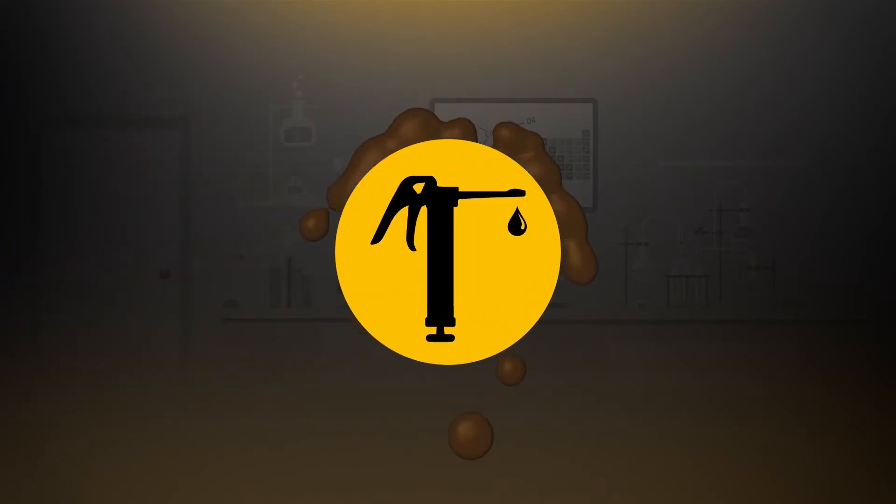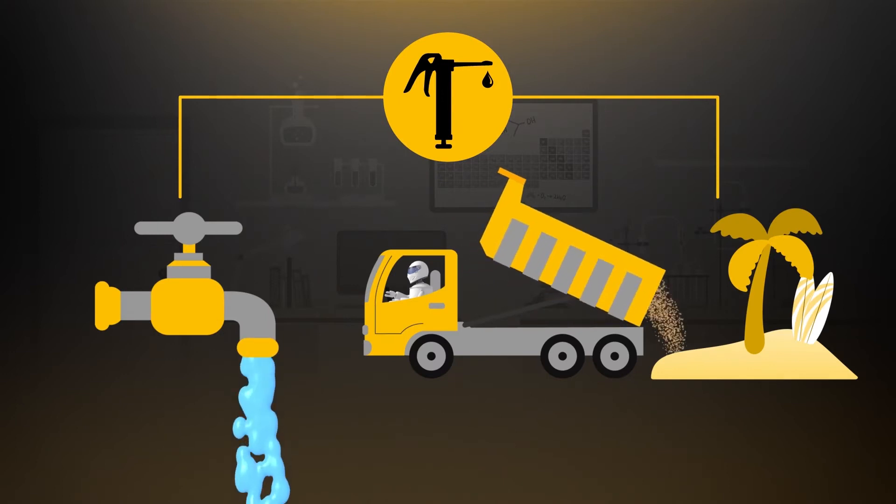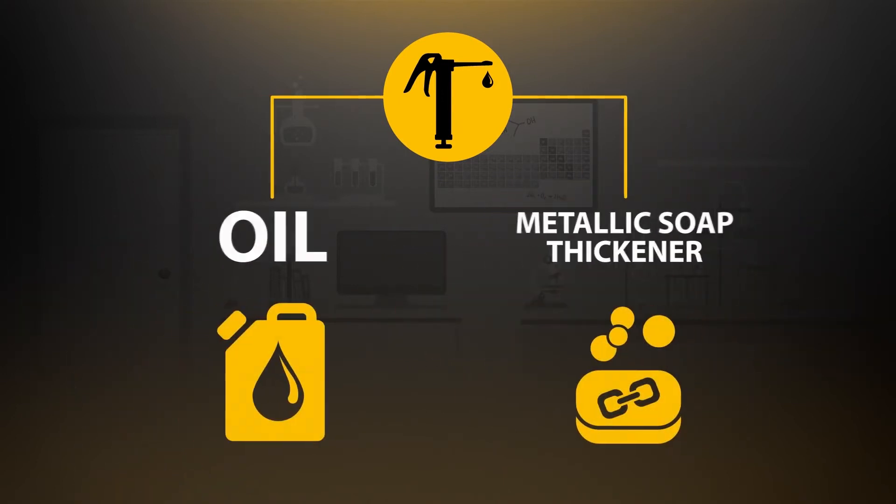The making of grease can be compared to making slippery, slimy mud. But instead of water and fine sand, we use oil and metallic soap thickener.